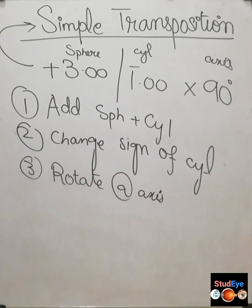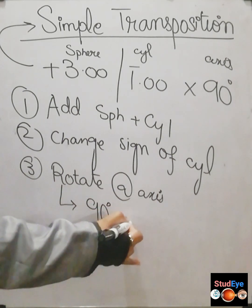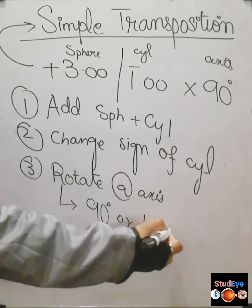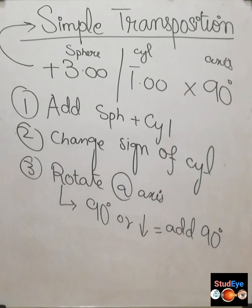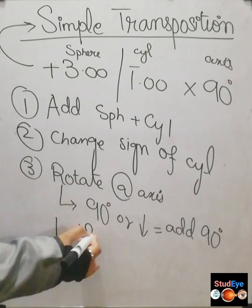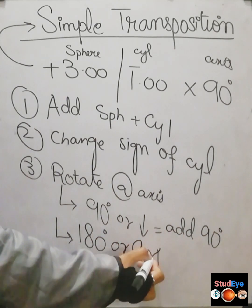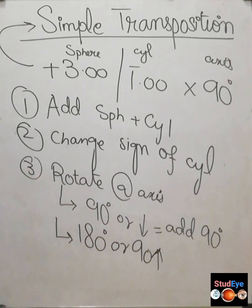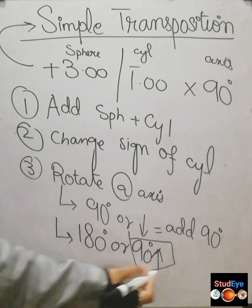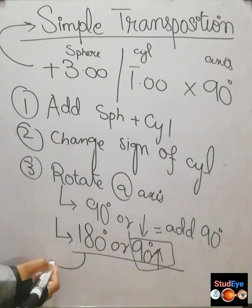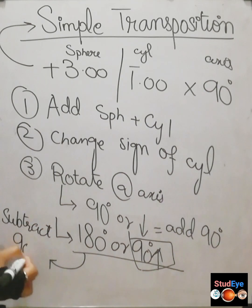The third step is to rotate the axis. If the axis of the patient's prescription is 90 degrees or less, you add 90 degrees to the axis. If the axis is above 90 degrees — that is, between 91 and 180 degrees — you subtract 90 degrees from the axis.